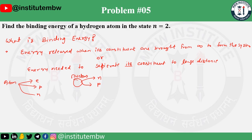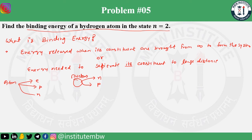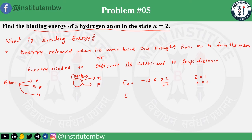So you have to find the binding energy of the hydrogen atom in the state n is equal to 2. We have the expression for total energy: En is equal to minus 13.6 z-squared over n-squared. In this case z is equal to 1 and n is equal to 2. So E2 is minus 13.6 times 1 divided by 4, which gives minus 3.4 electron volts.